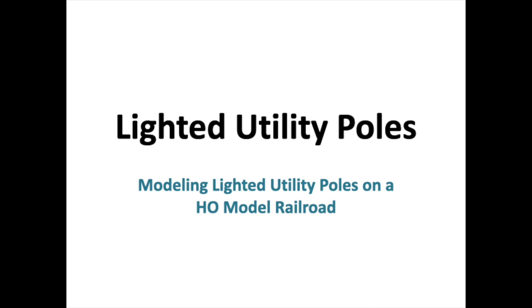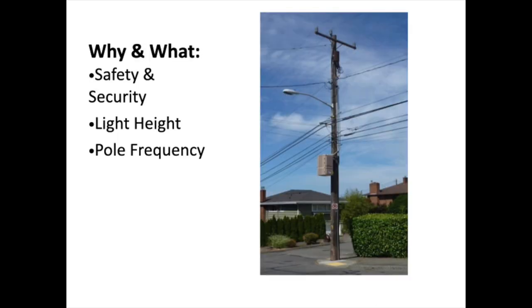Lighted utility poles are all around us. They're there for safety and security reasons, so that we can see where we're going when we're traveling around on the streets. Issues of lighting relate to the luminaire or the light source itself, and its height above the surface that you want to illuminate and the frequency that these lights are spaced.